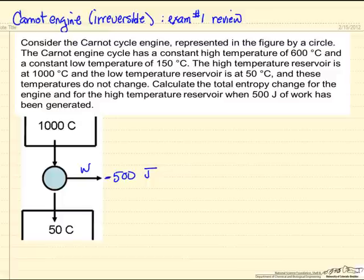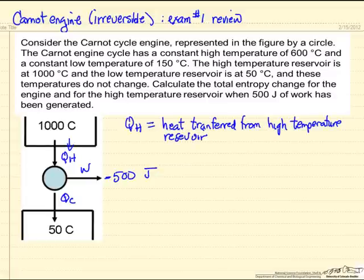We have a high temperature heat transfer and a low temperature heat transfer, and we have to be careful with notation. Since we're interested in the entropy change for the high temperature reservoir, I'll look at this QH. QH is going to be the heat transferred from the high temperature reservoir, and this value is negative because we're removing heat from the high temperature reservoir.